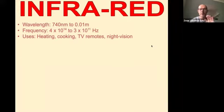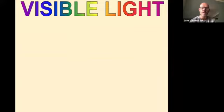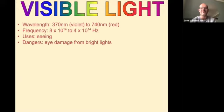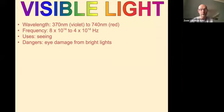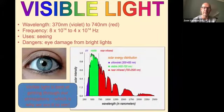Infrared radiation is used for heating — like bar fires that glow red — infrared induction cooking plates, TV remotes, and night vision cameras. Visible light — red, orange, yellow, green, blue, indigo, violet — is what we use for seeing. It can be dangerous to stare directly at a very bright light, which is why we don't stare at the sun.